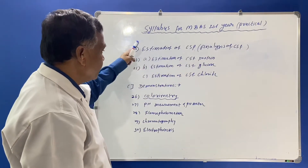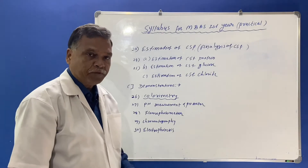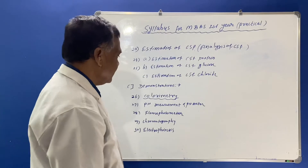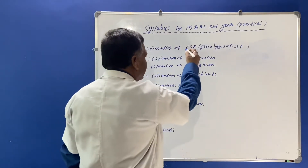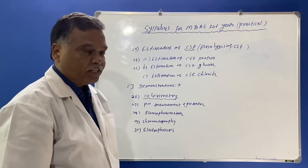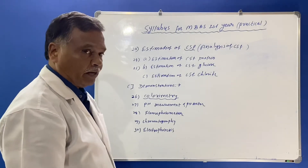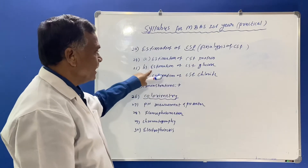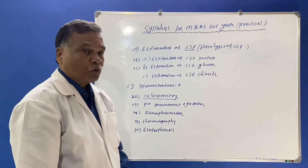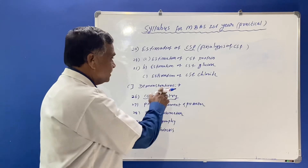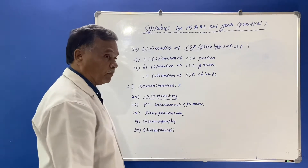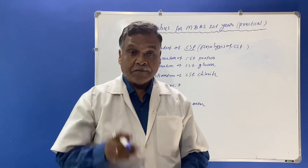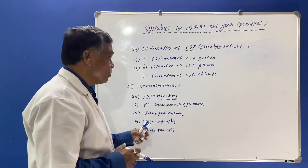We have seen sections A and B. In section B, estimation of CSF is there — that is, cerebrospinal fluid analysis is to be done in the laboratory. This includes estimation of CSF protein and estimation of CSF glucose. Students must know how to find out the proteins and glucose from the CSF. Cerebrospinal fluid is present in the vertebral column.